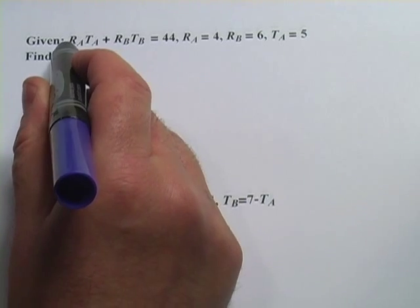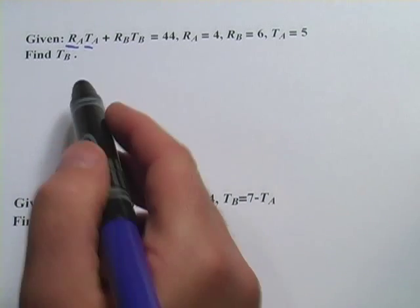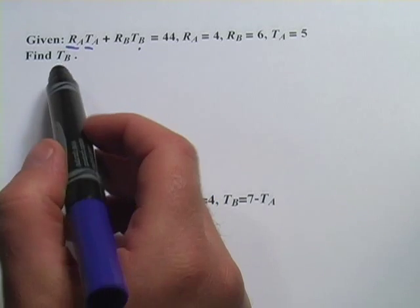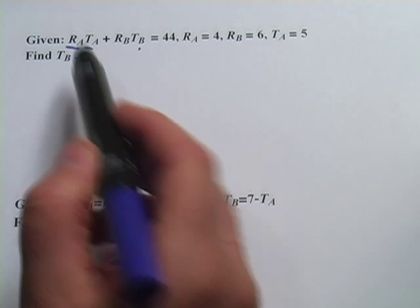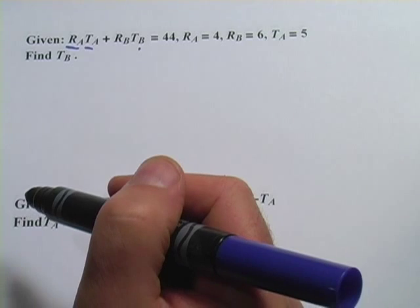You would read this variable as r sub a, and this variable as t sub a. They're two different variables. It doesn't matter that they both have sub a. You could think of this as a times b plus c times d. They're just other names for variables.